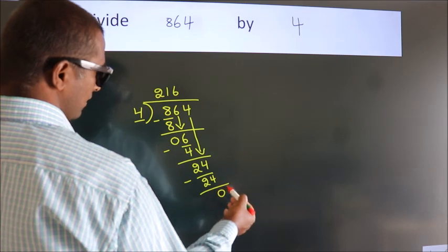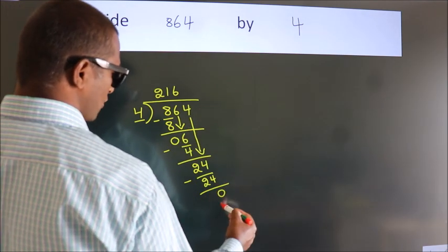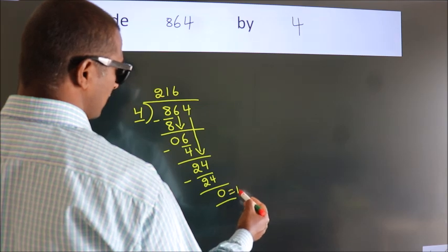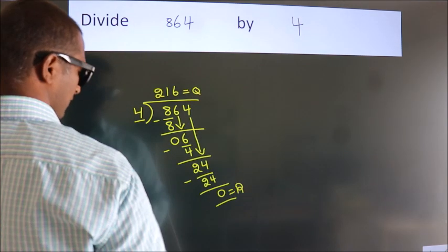After this, no more numbers to bring it down. So, we stop here. This is our remainder. This is our quotient. That's all. Thank you.